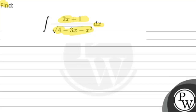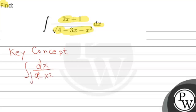Let's see how we do this question. First, we should know the key concept. The key concept we will use in this question is: the integral of dx upon √(a² - x²) is equal to sin⁻¹(x/a) plus C, where C is the constant of integration. We will use this formula.